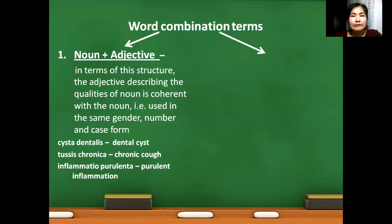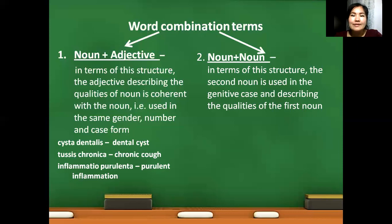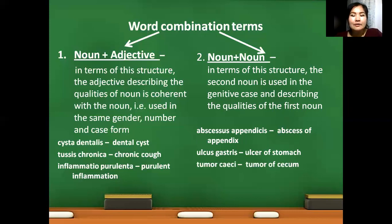Second type of word combinations are terms having structure noun plus noun, whereas second noun is used in genitive case form and describes the qualities of first noun. Look at the example: abscessus appendicis. As you see, appendicis, second noun, is used in genitive form. The ending is giving us this information. Which abscess? Abscess of appendix. Abscess is described by 'of appendix.' Same is happening with next examples: ulcus gastris, ulcer of stomach, and tumor caeci, tumor of cecum.